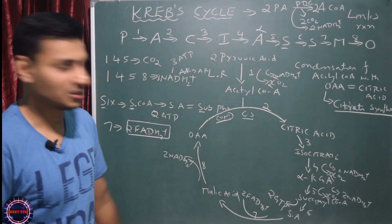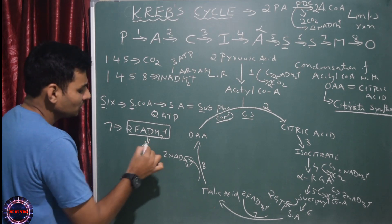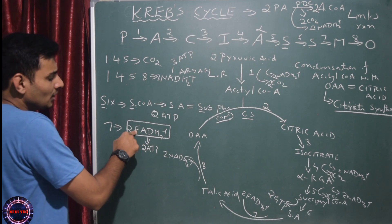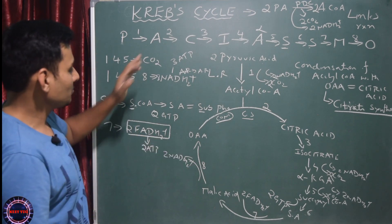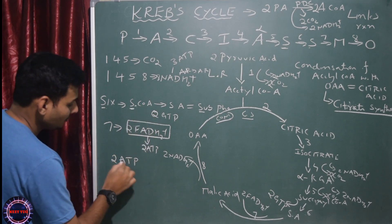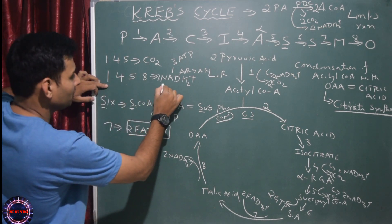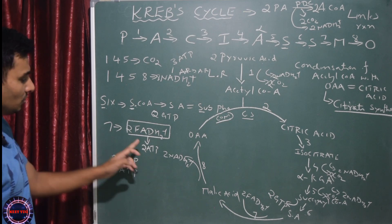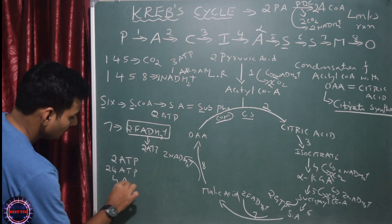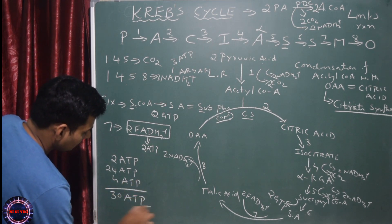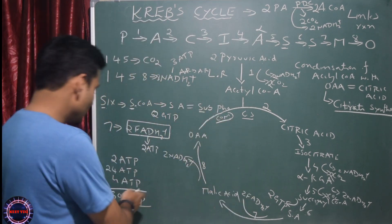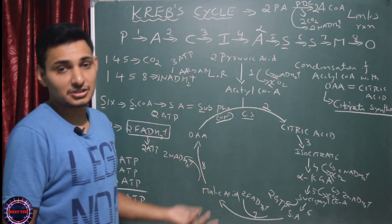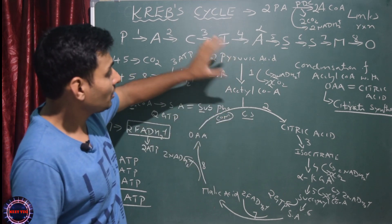Step 7: 2 FADH2 produced (worth 4 ATP). From NADH2: 3×2 = 24 ATP. Substrate level: 2 ATP. Plus FADH2: 4 ATP. Total from Krebs cycle: 30 ATP. With glycolysis: 38 ATP from complete glucose oxidation.